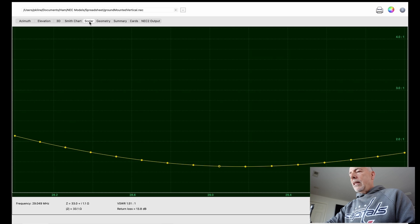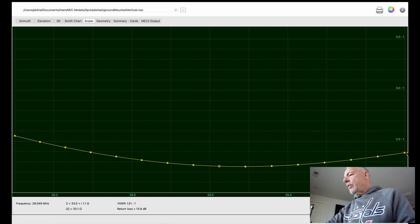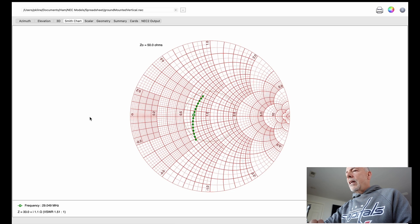Let's look at the SWR. So less than 2 from 28.1 to all the way to 30. So pretty nice antenna. Looks good on the simulation. Let's build it.